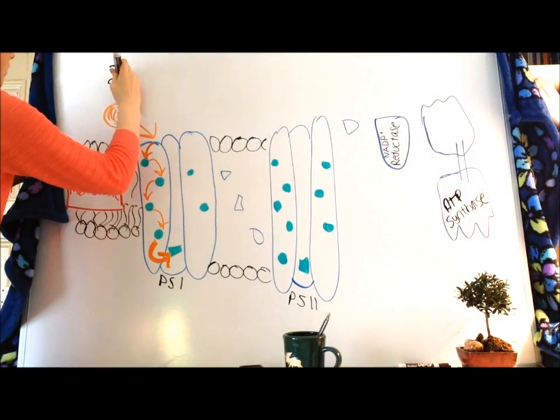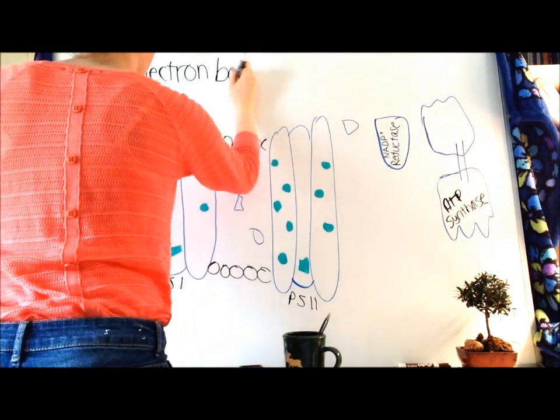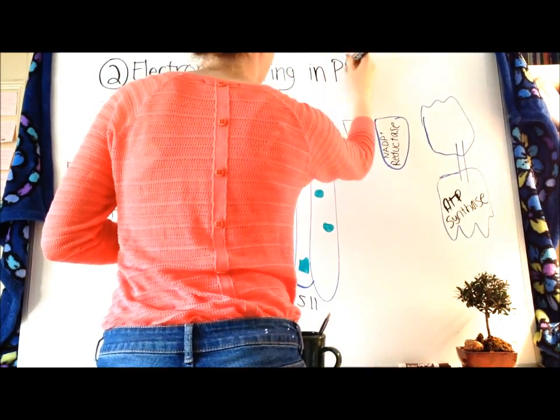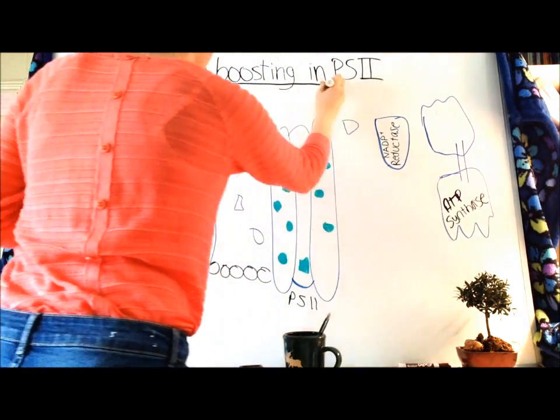Now onto step two, electron boosting in Photosystem II, which should be labeled Photosystem II by the way, not Photosystem I.